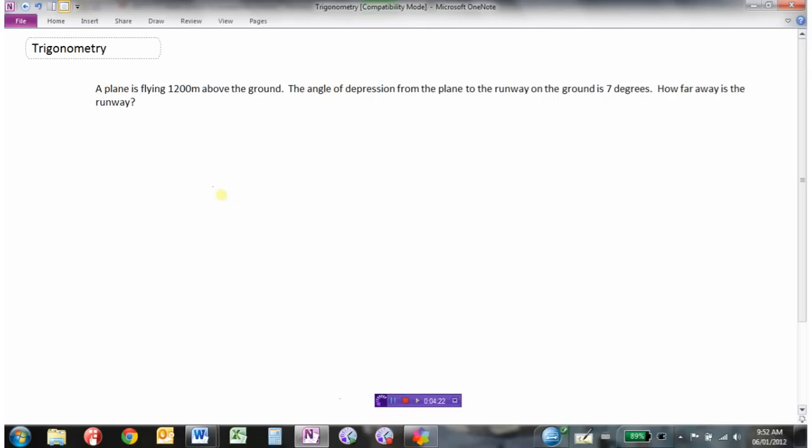We always start with a diagram. So here's our airplane, and this plane is 1200 meters above the ground. And he's looking down on a runway.